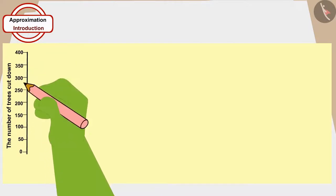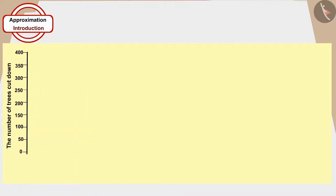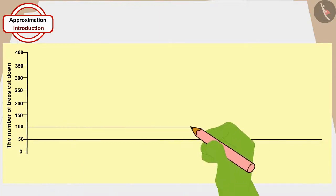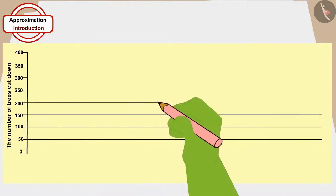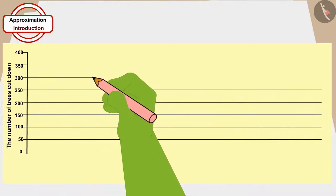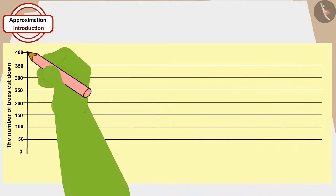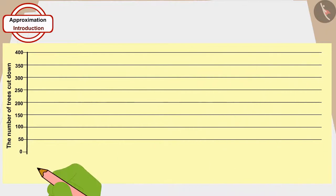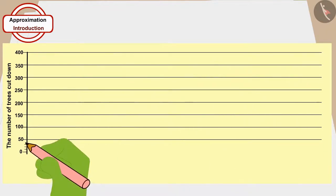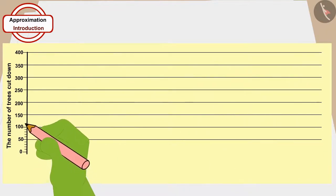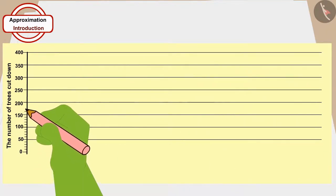He drew a horizontal line from each number. Then, in between every two numbers, he drew four small lines at equal distance.